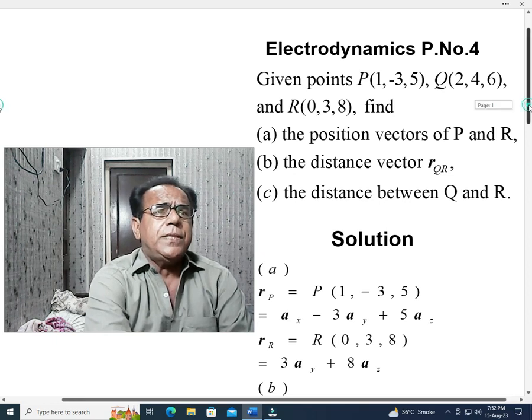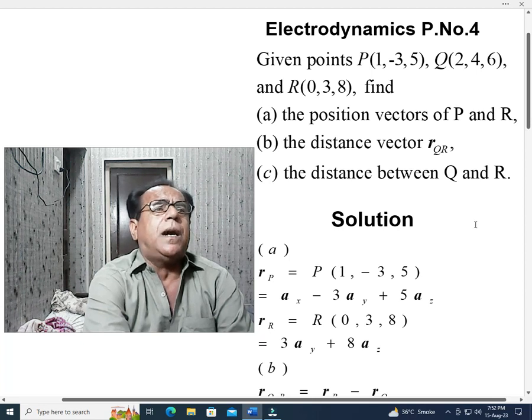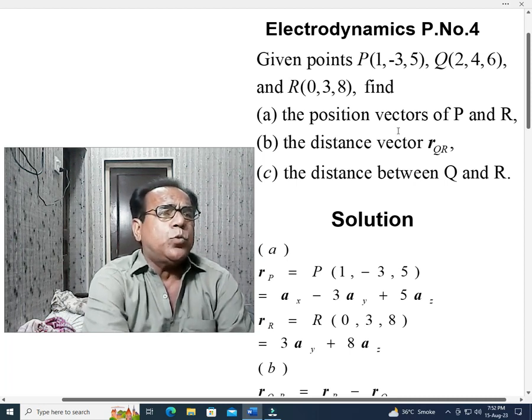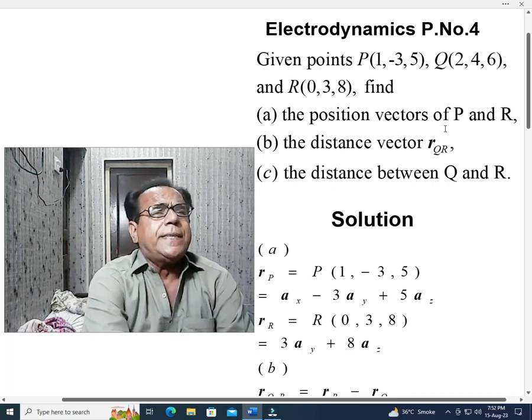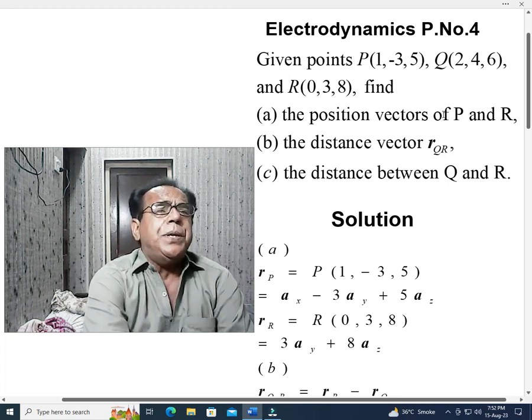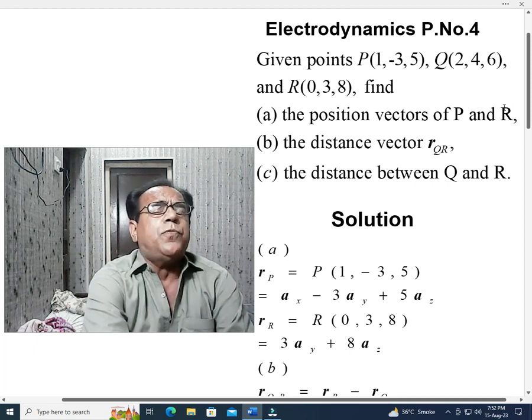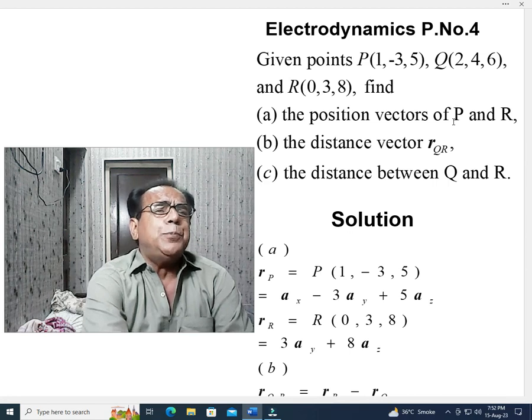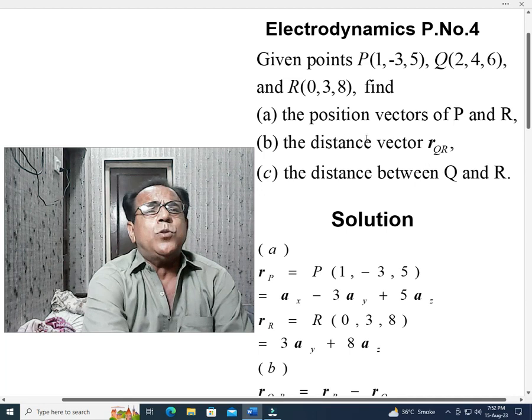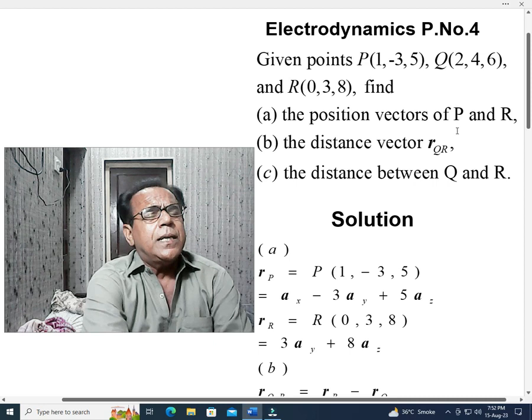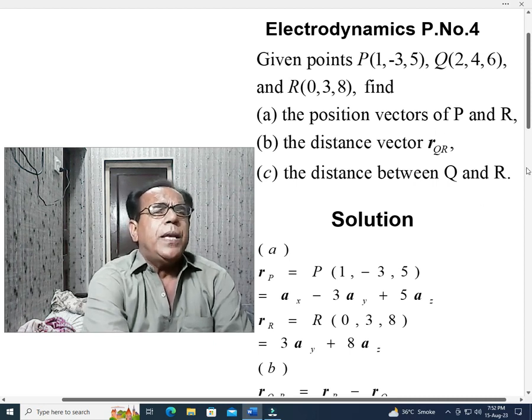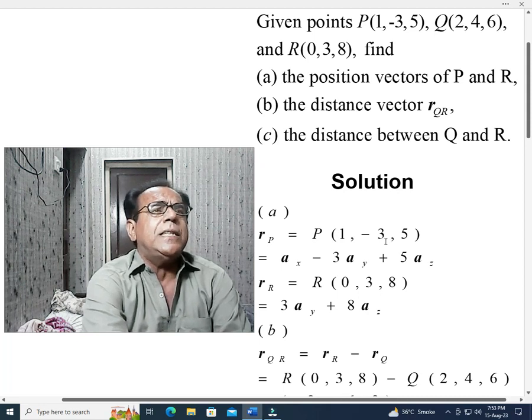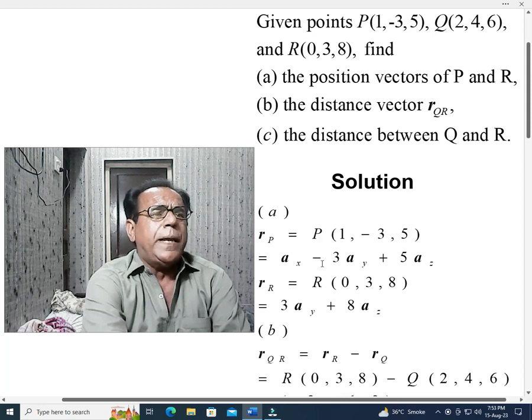Solution, first we solve part A in which position vectors of P and R are to be calculated. Because position vectors of P and R is always calculated with respect to origin 0,0,0. So position vector of P is just coordinates of P and position vector of R is just the coordinates of R. Because these coordinates itself suggest their position and that position is always with respect to origin. So there is no difference between position vector of P and original coordinates of P.